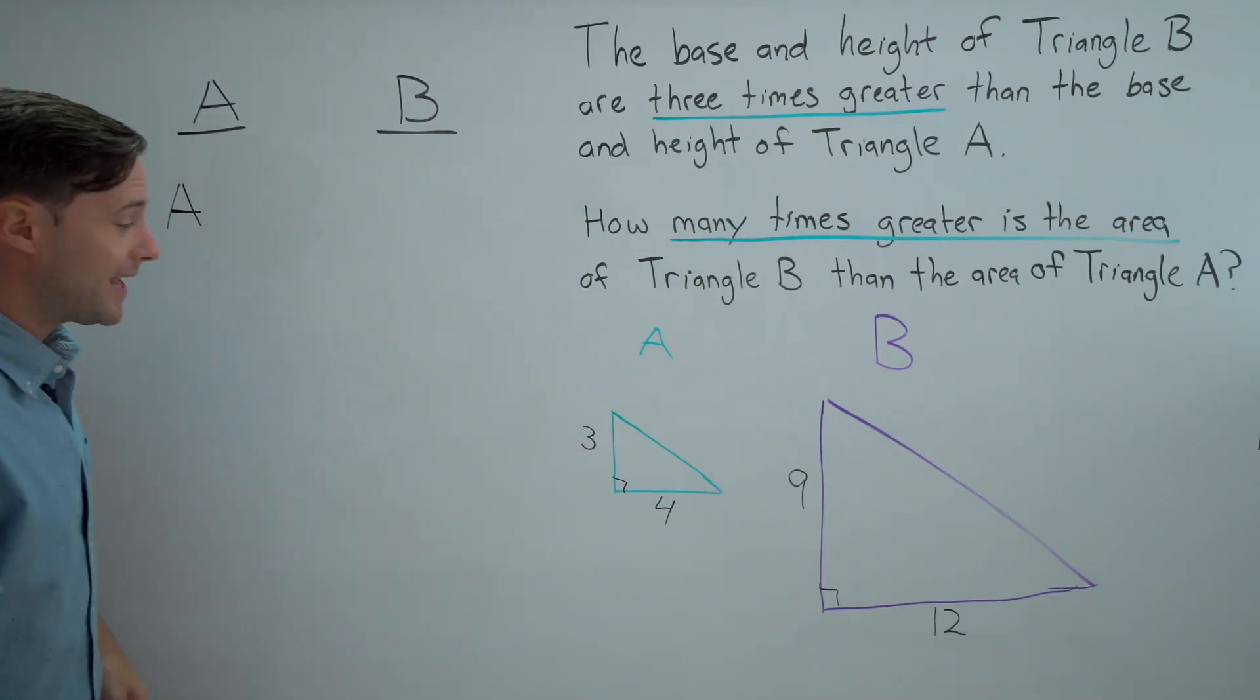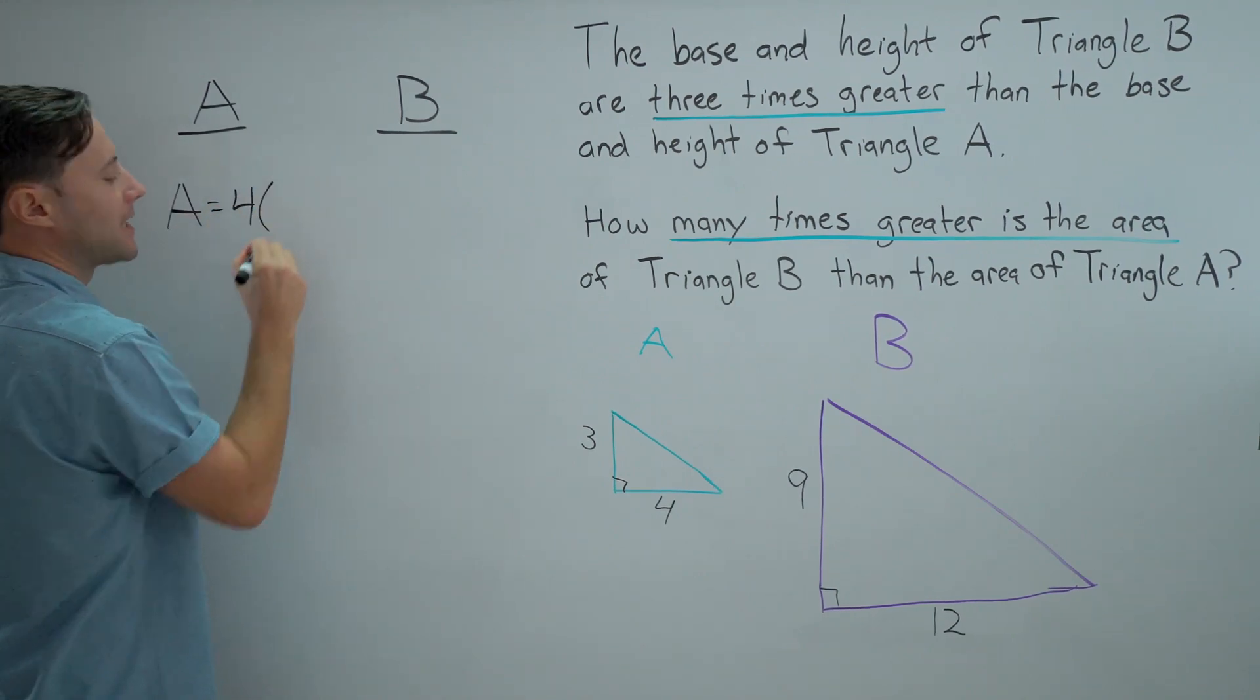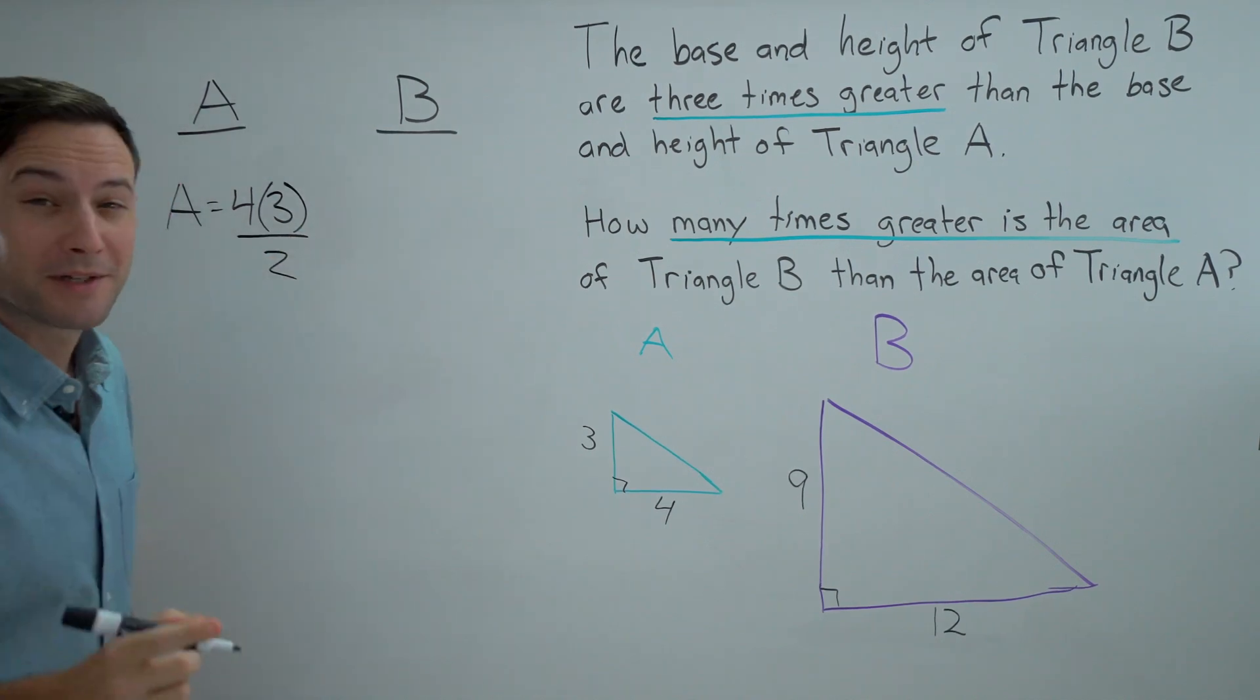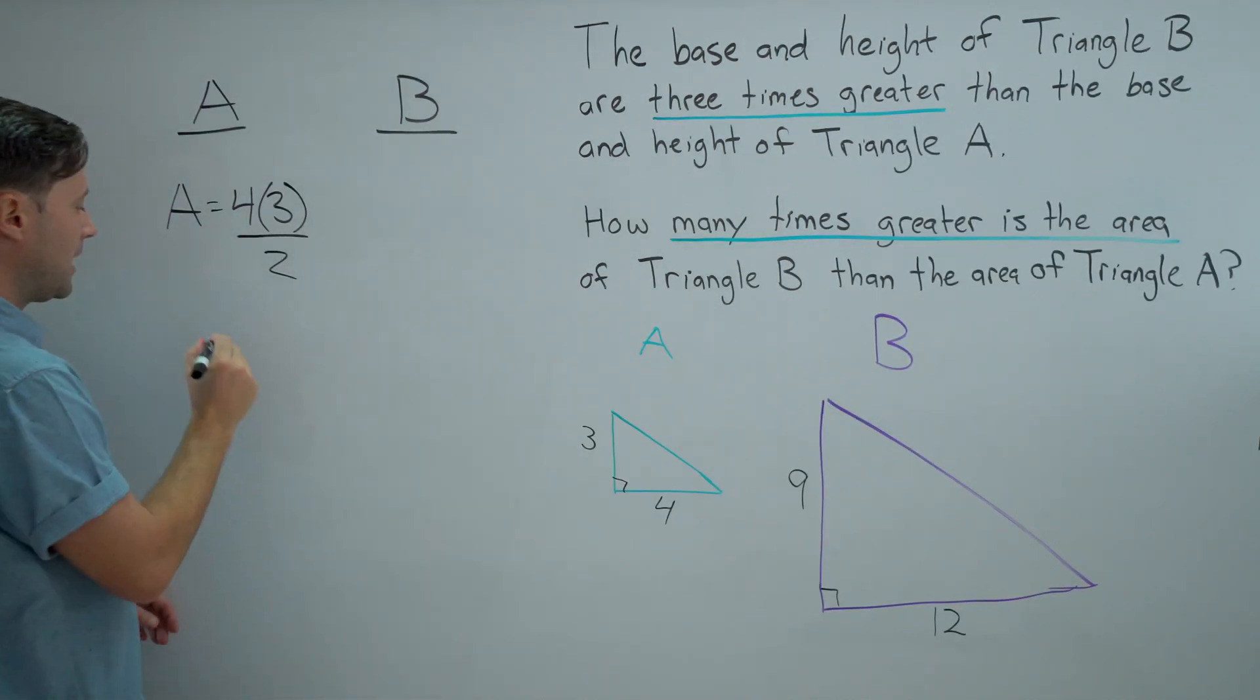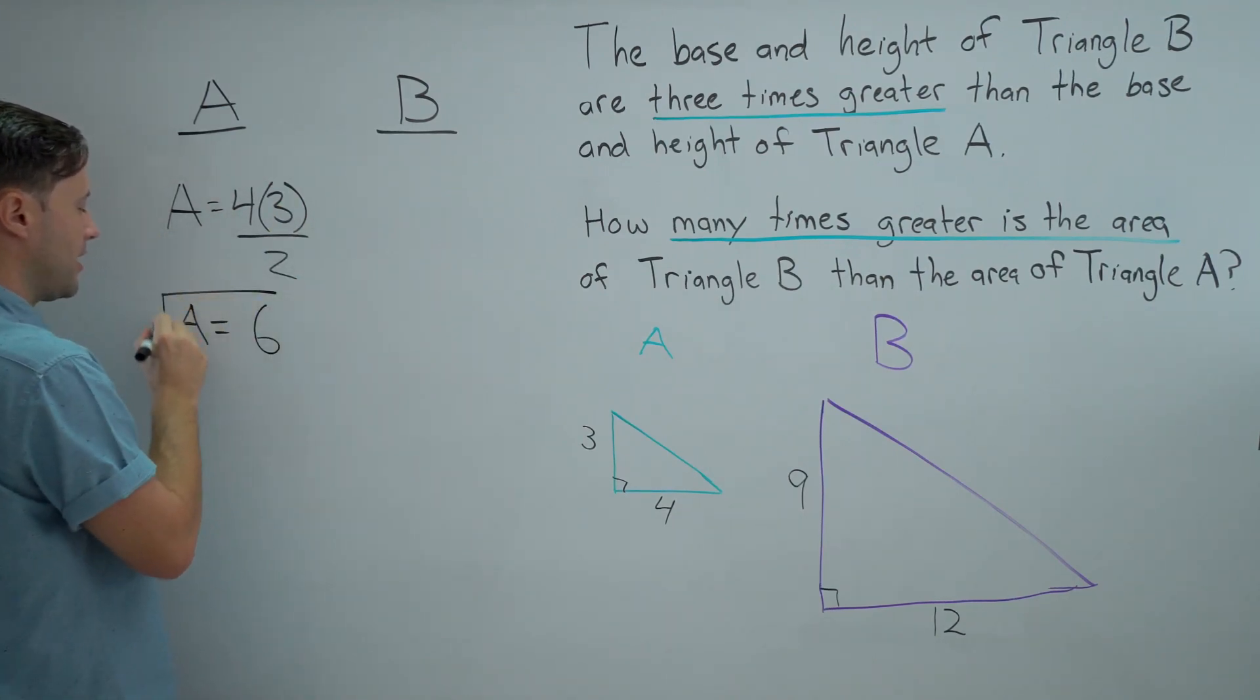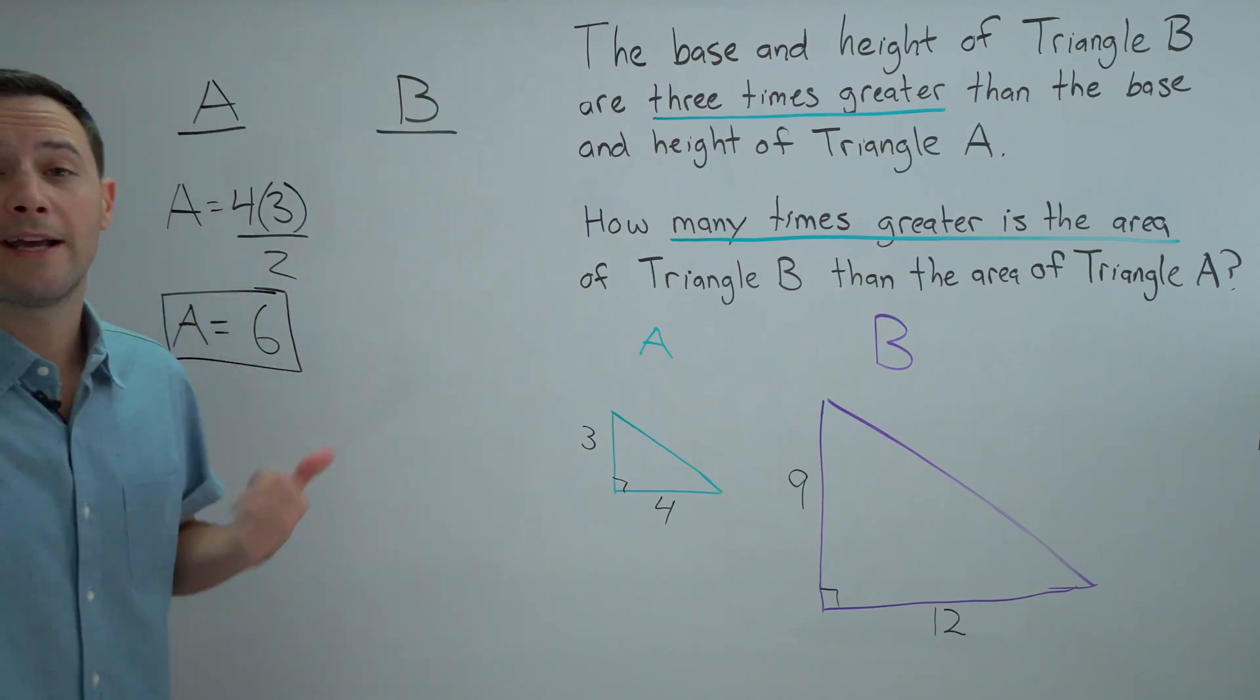So for triangle A, we've got a base of four times a height of three divided by two. Because remember, it's a triangle. We got to divide by two. And that gives us an area. Well, that's 12 divided by two is six. So the area of triangle A is going to be six.